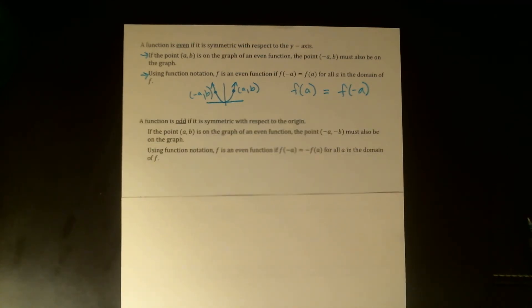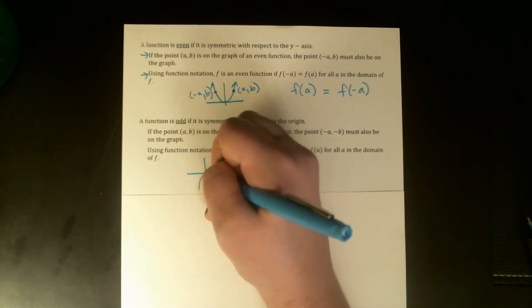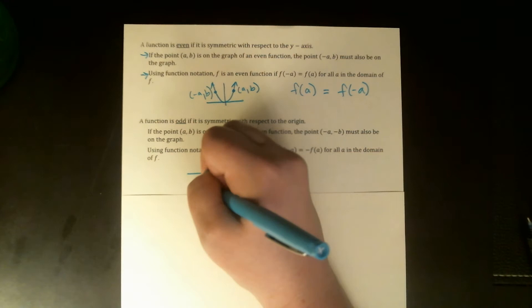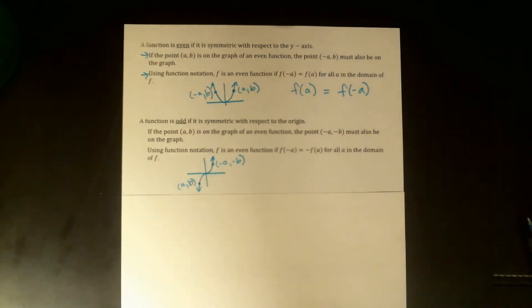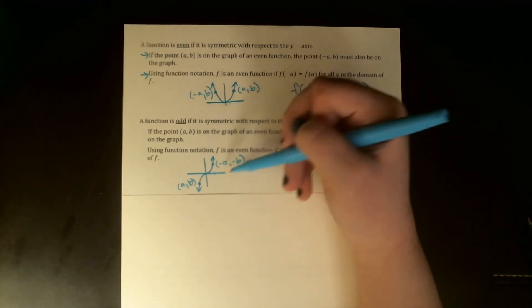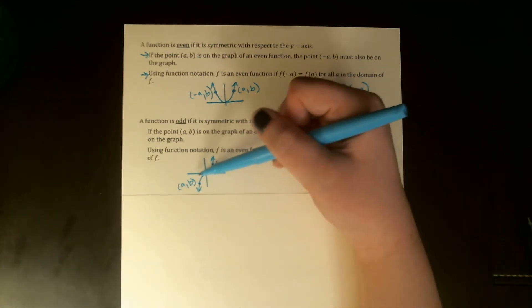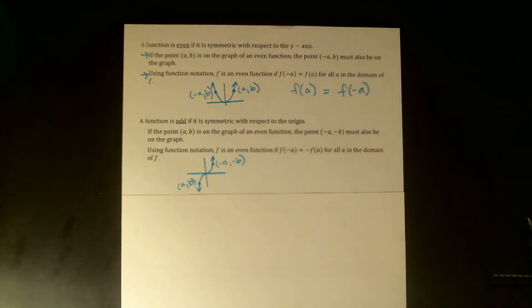Odd functions are symmetric with respect to the origin — you could also call this rotational symmetry. If you turn the graph 180 degrees, it looks exactly like what you started with. An example graph would be something like an S-curve. If a point down here is (A, B), then the point over here would be (−A, −B). Remember, A does not have to represent a positive number. If (A, B) is in quadrant 3, then A and B are both negative, and their opposites will be positive. So we have opposite pairs through the origin.